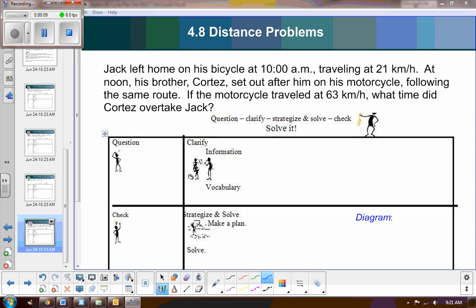So Jack left his home on a bicycle at 10 a.m. traveling at 21 kilometers per hour. At noon, so that's two hours later, his brother Cortez set out after him on his motorcycle following the same route. If the motorcycle traveled at 63 kilometers per hour, what time did Cortez overtake Jack?